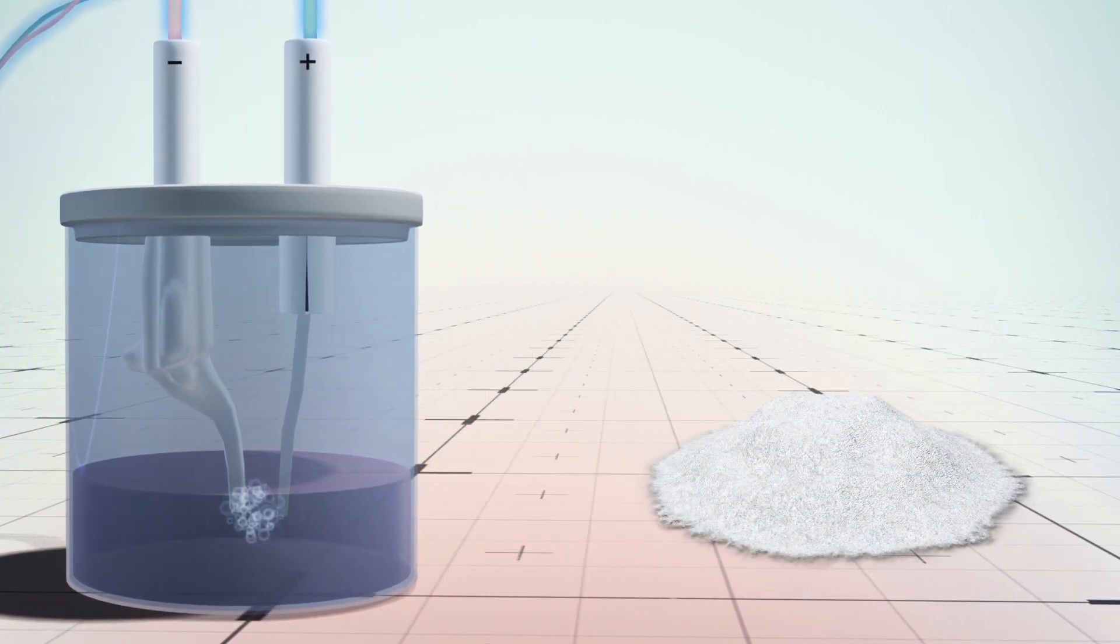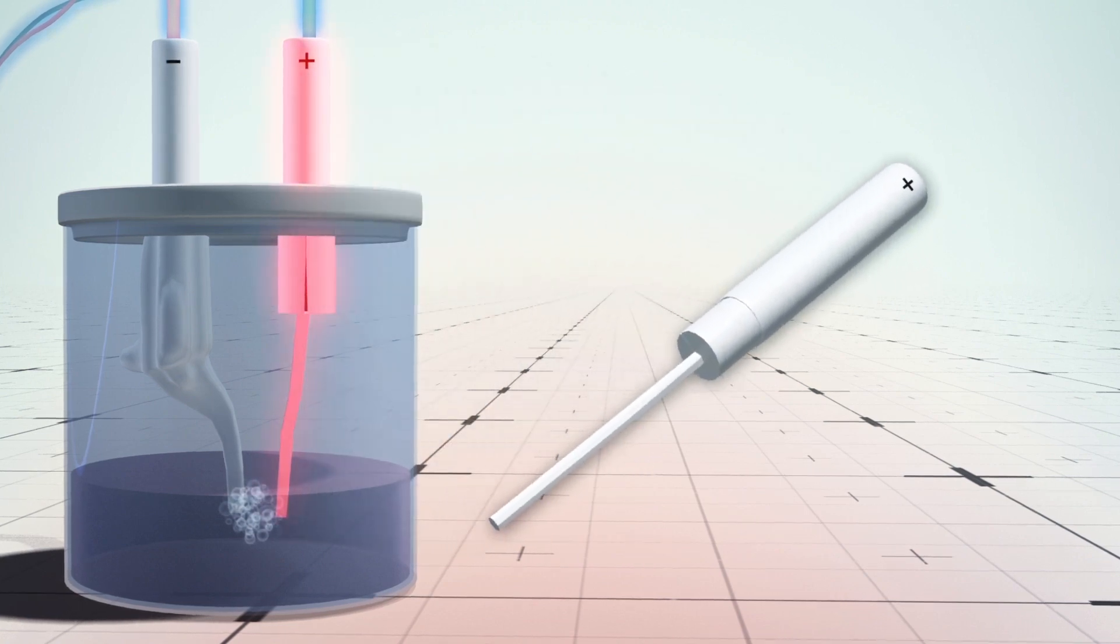To prevent corrosion from the chloride in saltwater, negatively charged nickel layers were coated onto the anode to create a barrier.